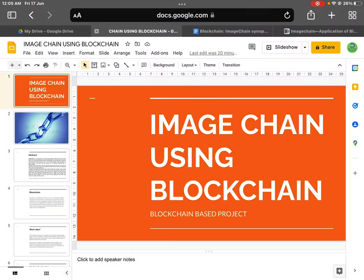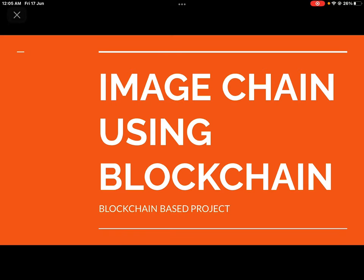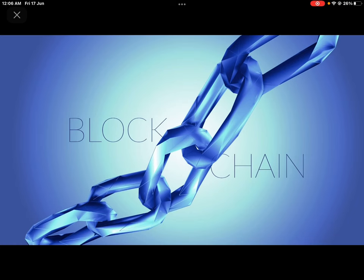The project name is Image Chain — a blockchain project. In this project our work is on blockchain. Blockchain is made from two words: the first word is 'block' and the second word is 'chain'. In a block there is information as a record, and that is connected with different nodes, and those connections are in a chain.